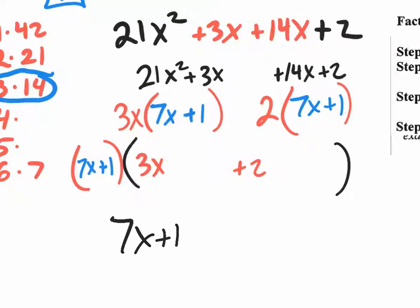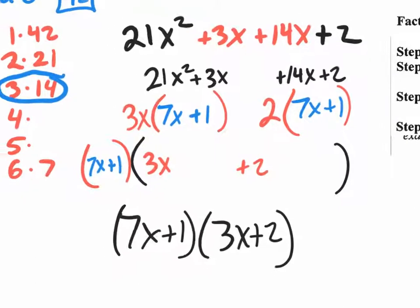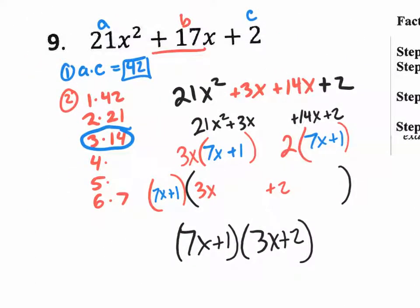7x plus 1 times 3x plus 2. If you wanted to double check it, all you have to do is distribute and combine like terms and see if it really does give you that original quadratic trinomial that you started with. I'm done.